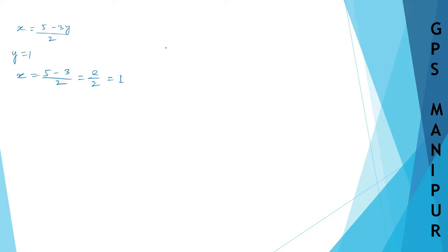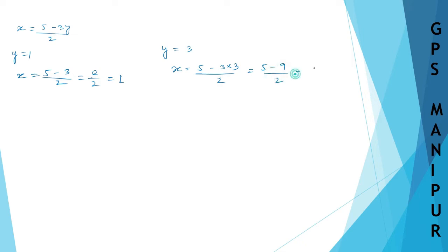Now y is equal to 3. So x will be equal to 5 minus 3 into 3 divided by 2. That is 5 minus 9 divided by 2, which is minus 4 divided by 2, which is minus 2.